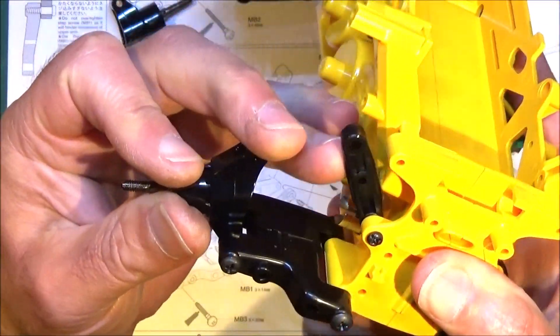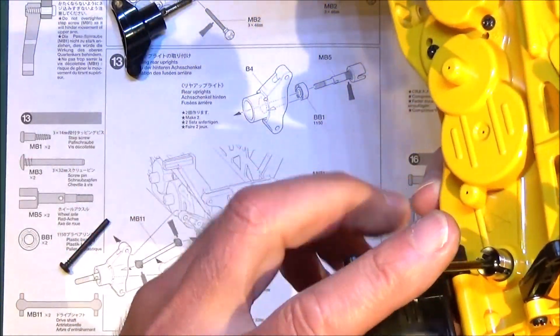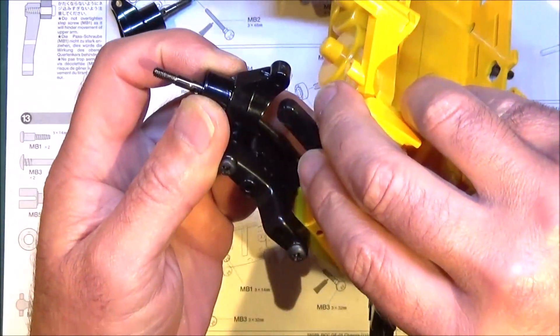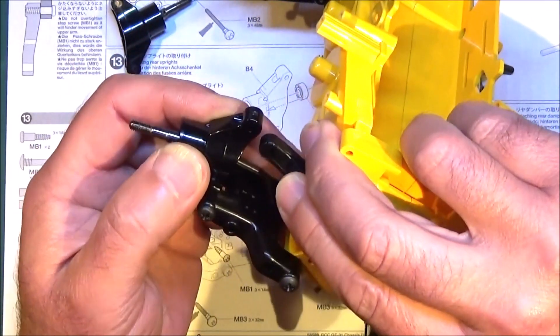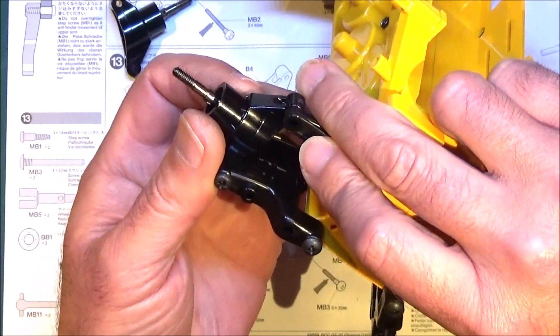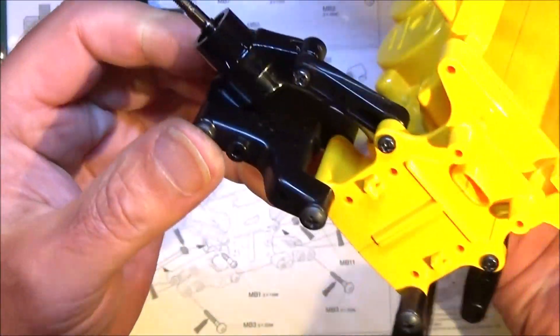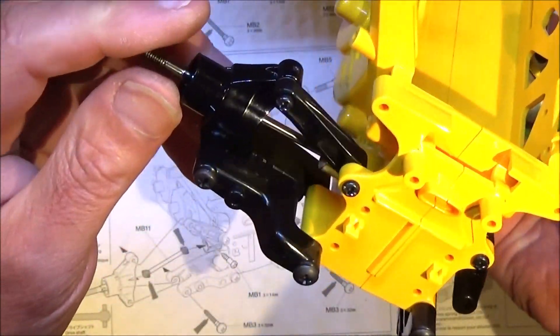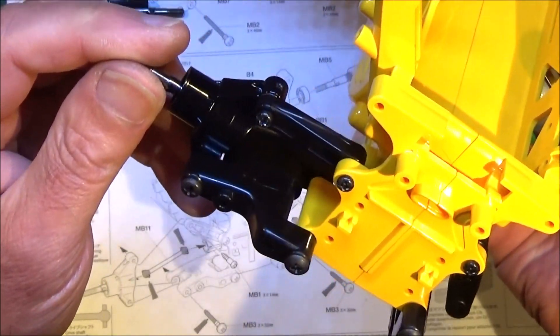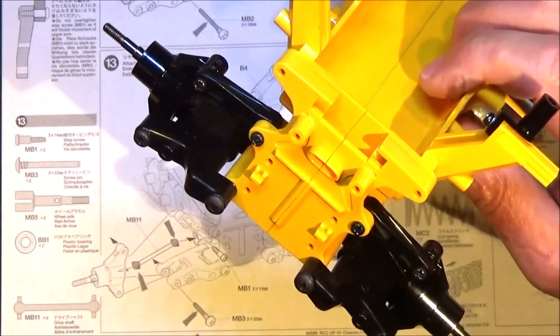That's the bottom fitted. Get your dog bone. Once your dog bone's in, you've got to get your top arm and connect that to the uprights with another step screw. Like so, and obviously repeat for the other side. With them both done, that's the end of step 13.